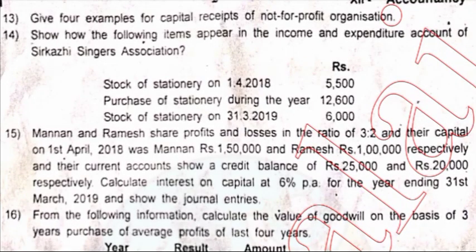Question 14: of Three Glory Singers Association. Question 15: Mannan and Ramesh share profits and losses in the ratio of 3:2, and their capital on the first day of April 2018 was Mannan 1,50,000 and Ramesh 1,00,000 respectively. Their current account shows credit balances of 25,000 and 20,000 respectively. Calculate interest on capital at 6% per annum for the year ending 31st March 2019 and show the journal entries.